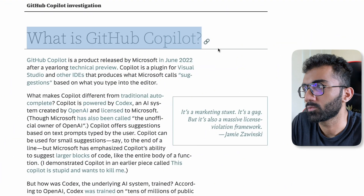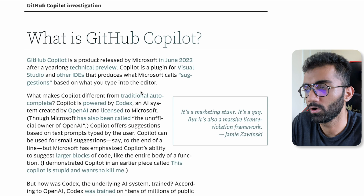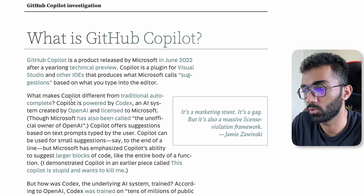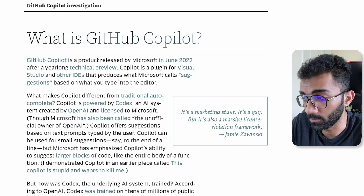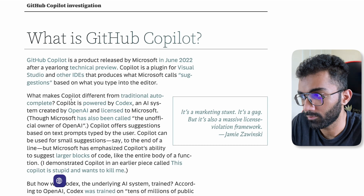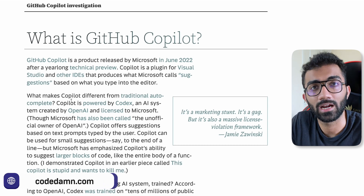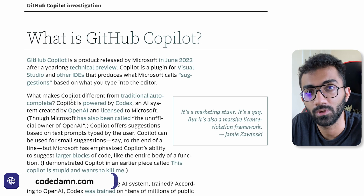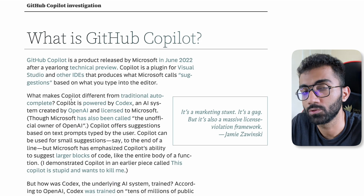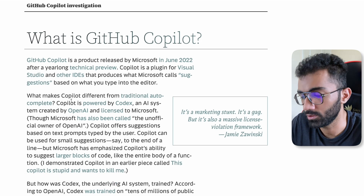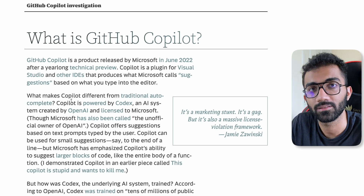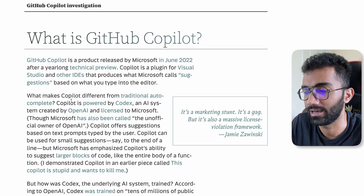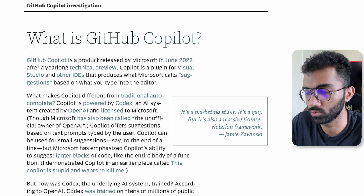First of all, let's understand what exactly GitHub Copilot is. According to this article, we all know that Copilot is an AI-powered coding assistant or autocomplete tool. The reason it is different from traditional tools is because it uses artificial intelligence to determine the context of what you need to do and then suggest things. You might write a comment like 'I want this to be done' and it will try to understand that and complete the code.